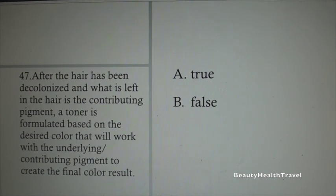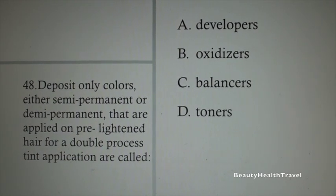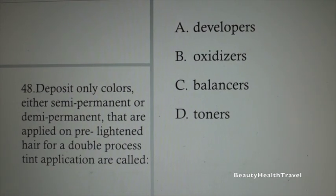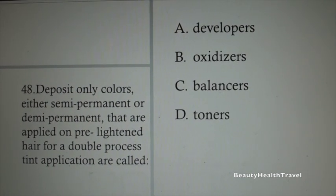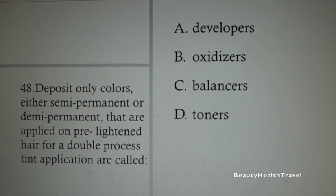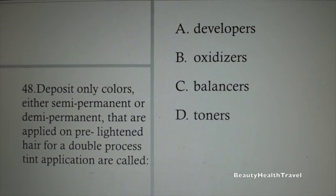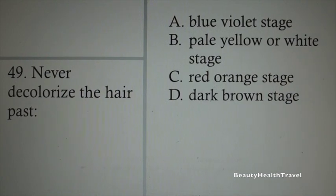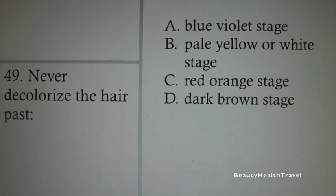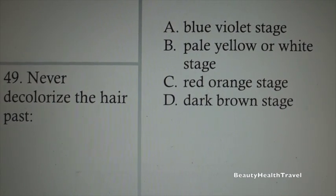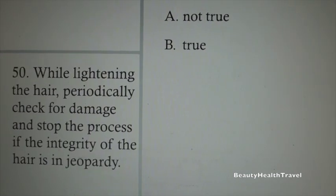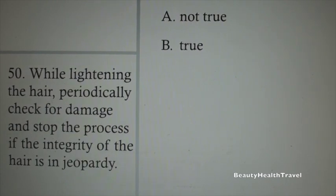Question 45: During the hair lightening process, the hair color goes: A. Lighter to darker, B. Thicker to thinner, C. Neutralization, D. 10 stages of decolorization. Question 46: Underlying pigment — what remains after hair lightening or decolorizing and is a base on which the hair colorist builds the desired color — is also called: A. Contributing pigment, B. Real pigment, C. Warm pigment, D. Cool pigment.